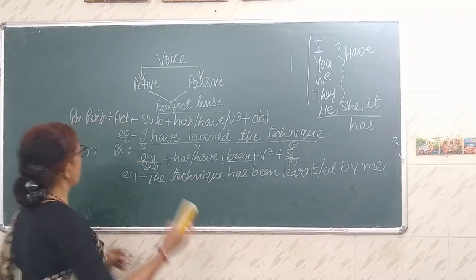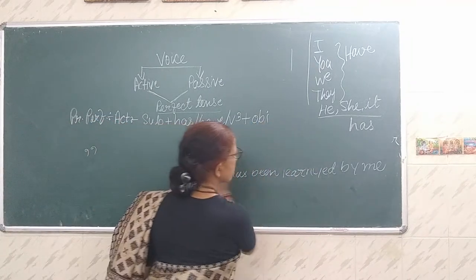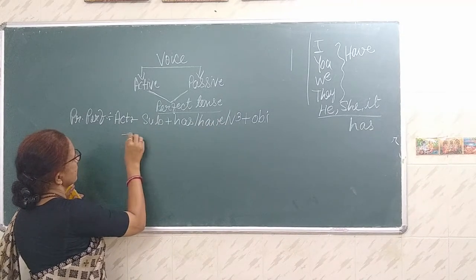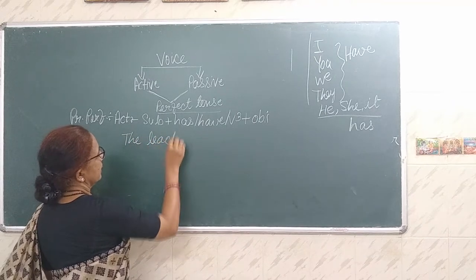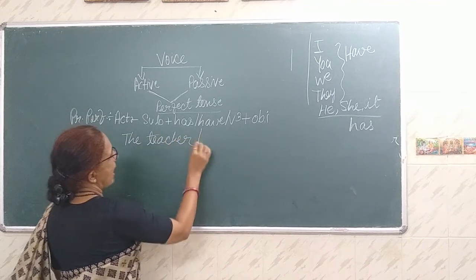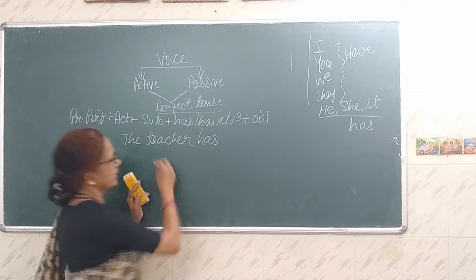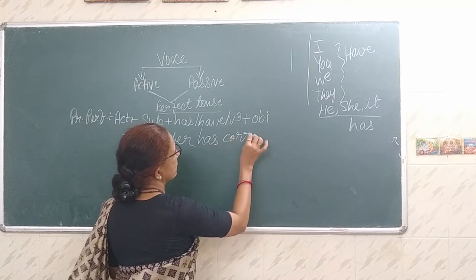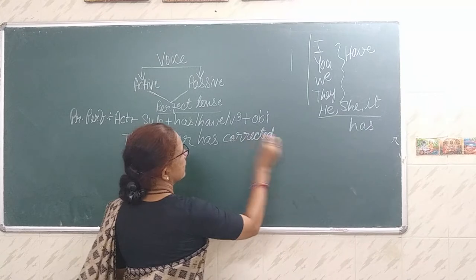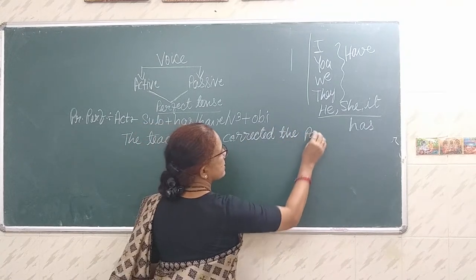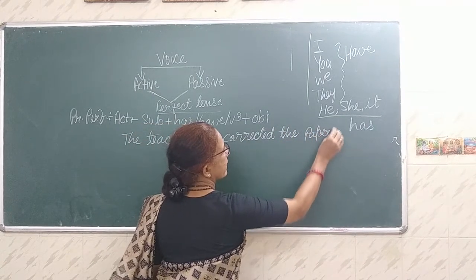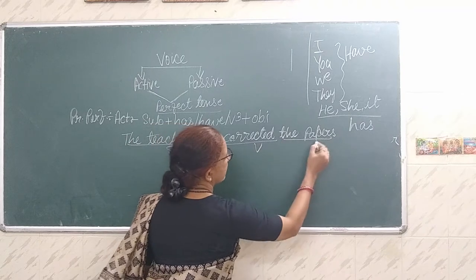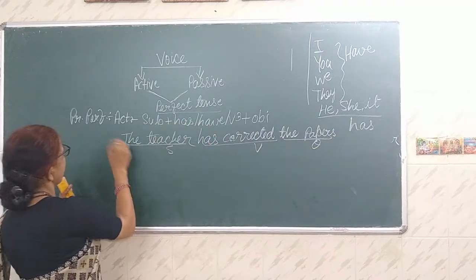Let's take some more examples. Let us go with 'has the teacher'. Teacher can be he or she, so 'has'. The teacher has corrected the papers. Subject is 'the teacher', 'has corrected' is the verb, and 'the papers' is the object. This is the active sentence.